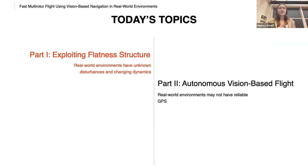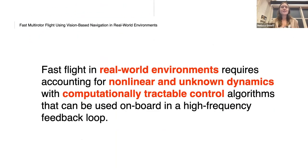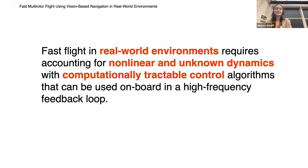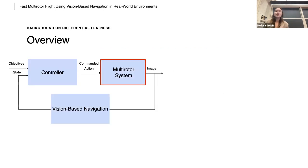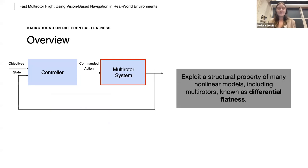So we'll start with part one. Fast flight in real world environments requires accounting for nonlinear and unknown dynamics with computationally tractable control algorithms that can be used onboard in a high frequency feedback loop. So one idea to achieve this is to exploit a structural property of many nonlinear models, including multi-rotors, known as differential flatness.